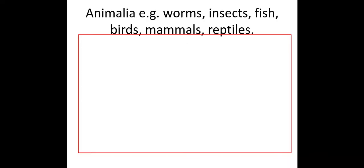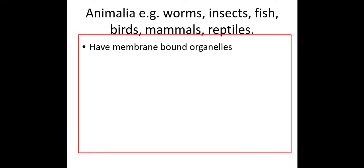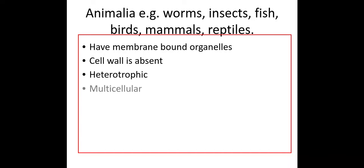Animals — for example, worms, insects, fish, birds, mammals, reptiles, and humans — we should know these are eukaryotic organisms, so they have membrane-bound organelles. They do not have a cell wall, and they are heterotrophic and multicellular.